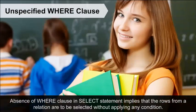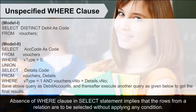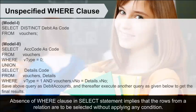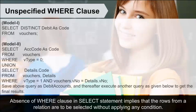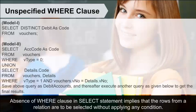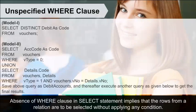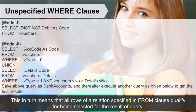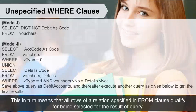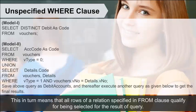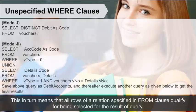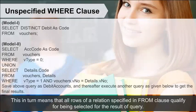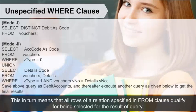Unspecified WHERE Clause — the absence of a WHERE clause in a SELECT statement implies that the rows from a relation are to be selected without applying any condition. This in turn means that all rows of a relation specified in the FROM clause qualify for being selected for the result of the query.